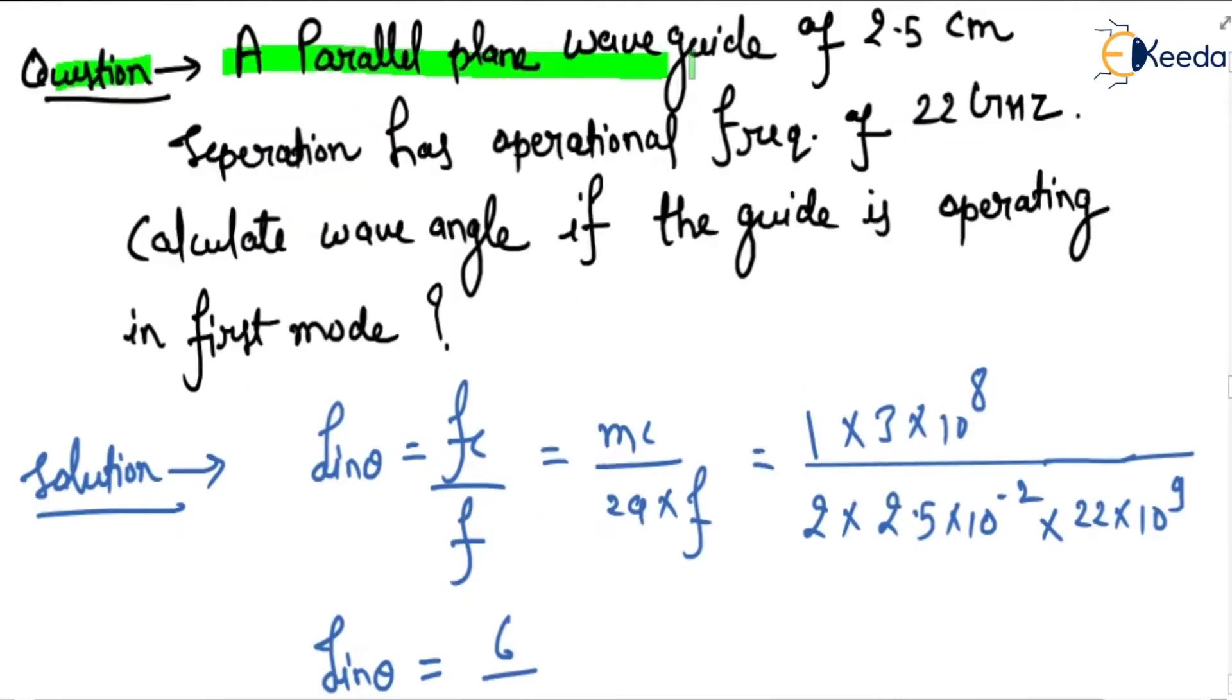Question is: a parallel plane waveguide of 2.5 cm separation has operational frequency of 22 GHz. Calculate wave angle if the guide is operating in the first mode.